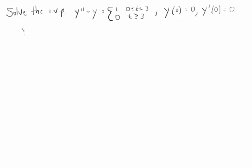So the first thing we want to do is rewrite this using heaviside functions and a really easy way to rewrite the left hand side is 1 minus u3 of t.